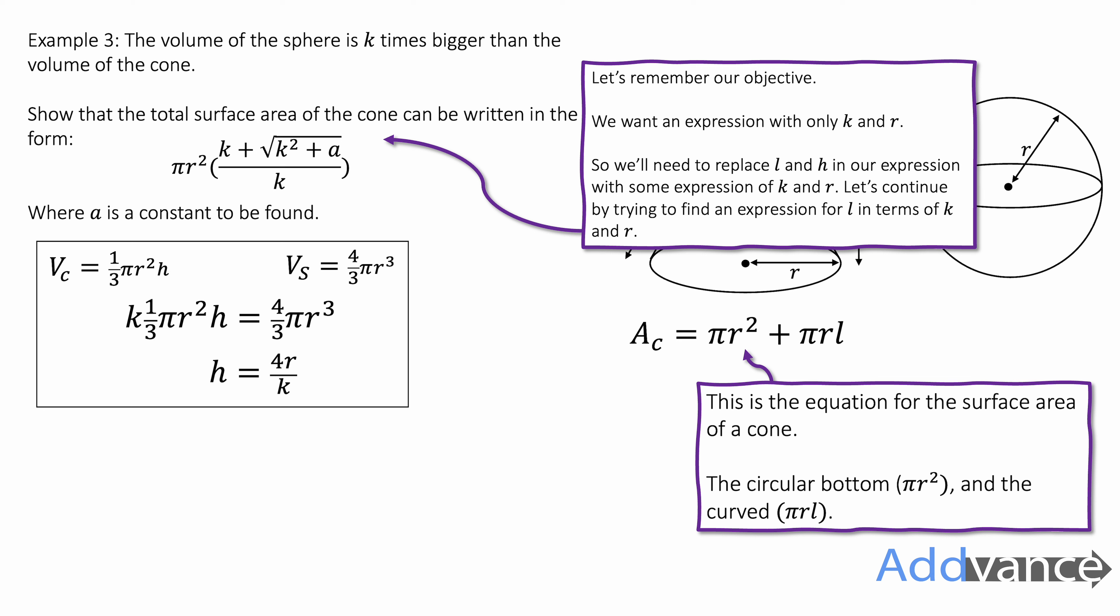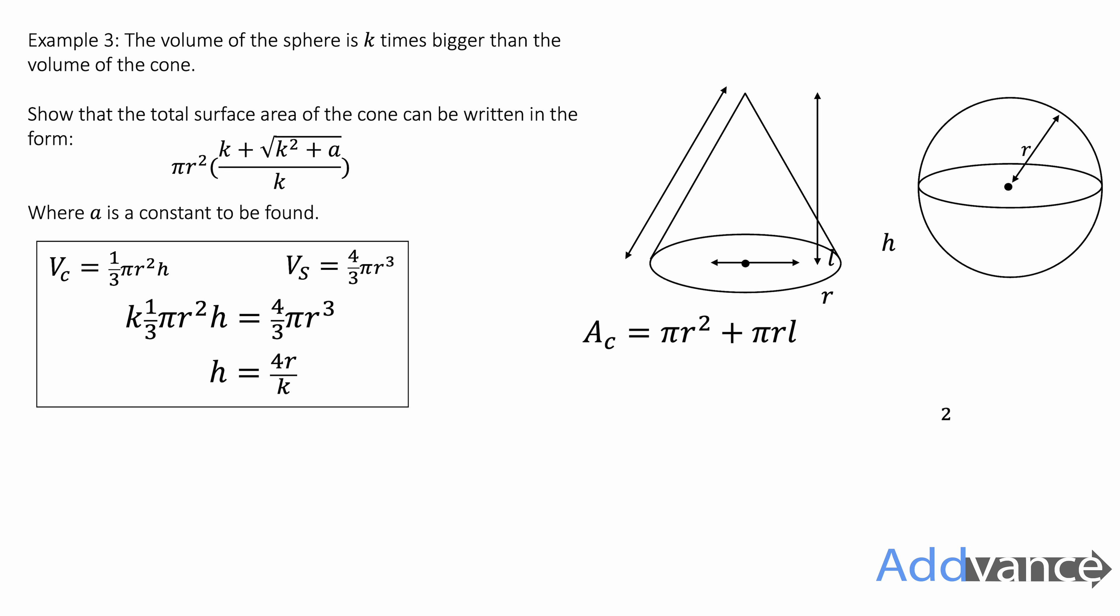And you add those together and you get this equation here. The curved surface area of a cone is given in your formula booklet. Now let's just remember our objective. We want to find an expression only with k's and r's. So look at our surface area of a cone here. It's got pi r l. So we've got an l there that we don't want in the final equation. So I think it makes sense to find an equation expression for l and substitute that into this expression here. So l can be given by Pythagoras theorem because this is a right circular cone. And the radius and the height make a triangle with a right angle triangle. So l squared is the same as r squared plus h squared. We square root both sides and we get this.